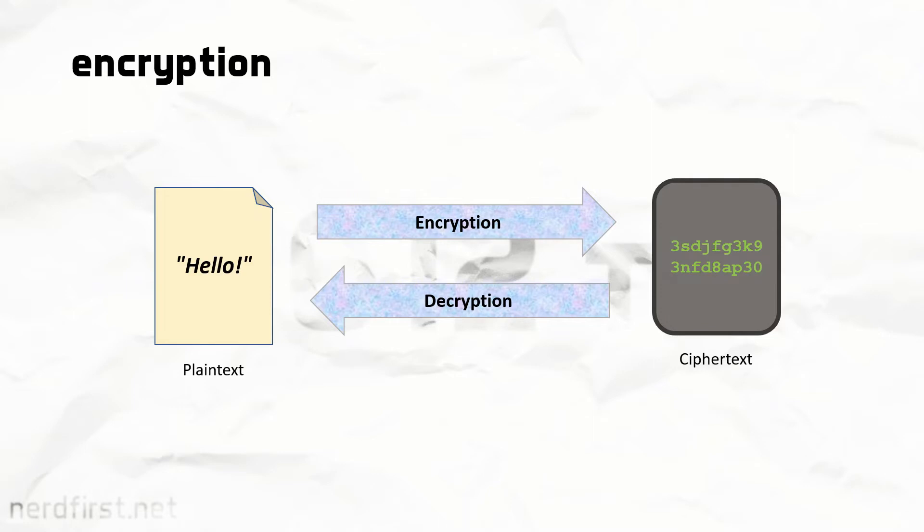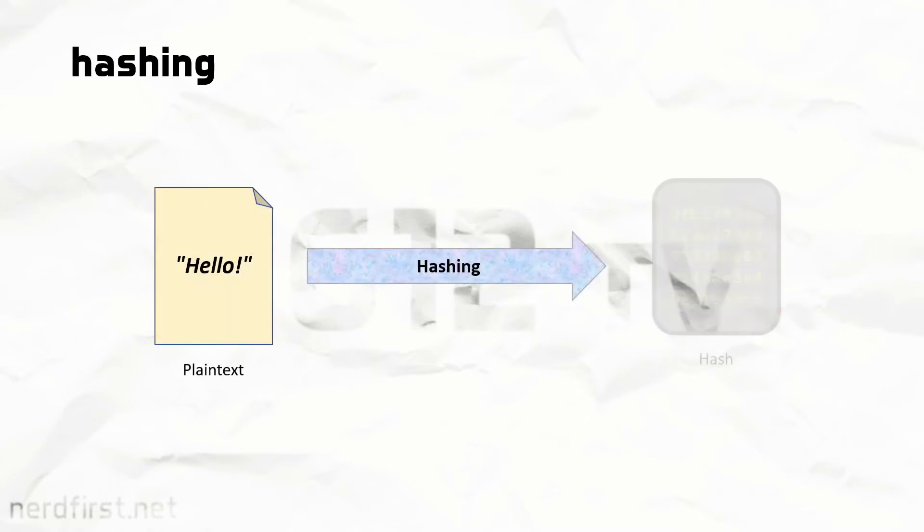Instead, a different procedure called hashing takes place. It is conceptually not that different. We have our plain text, and we put it through a hashing algorithm to get something that is, again, a garbled mess. In the context of hashing, we will call this a hash. The key difference between encryption and hashing is that you cannot reverse this process. Hashing is a destructive process. You can only go one way, from the plain text to get the hash, but you cannot recover the original plain text from the hash itself.